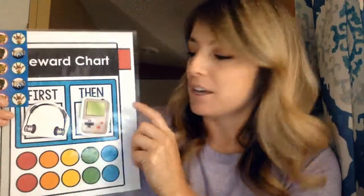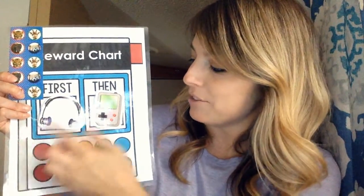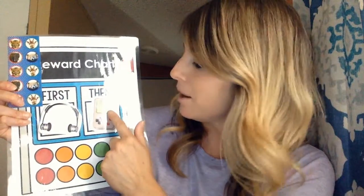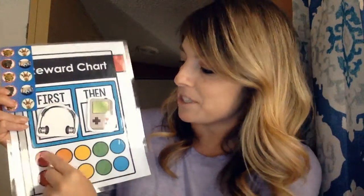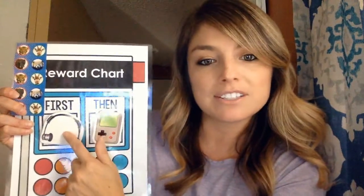We also have our first-then chart. This will help with keeping a child on task. Here we have headphones and this is going to indicate work. So first we're going to work and then we'll play our game. This can work either way — you can fill up the whole board before they get their reward, or you can do it one at a time. First we work, then we get our gaming system. We put a sticker here, then they get their gaming system. Then they understand that we have to work first, then we get to play. We can interchange these as well with anything that your child is interested in.